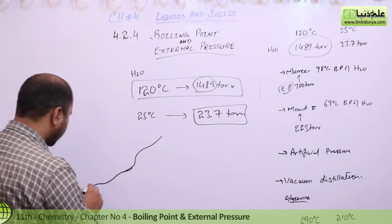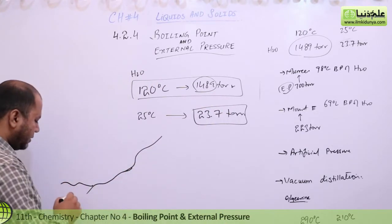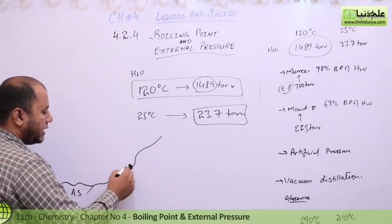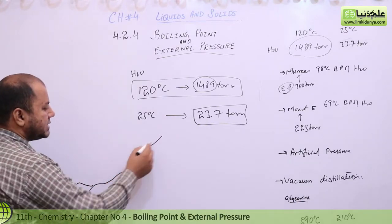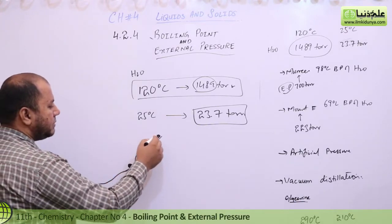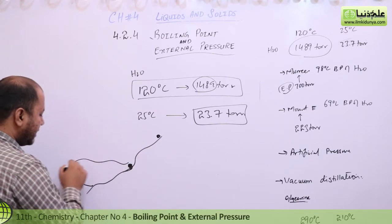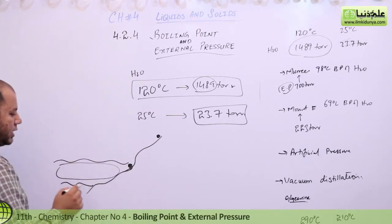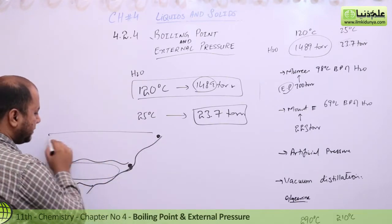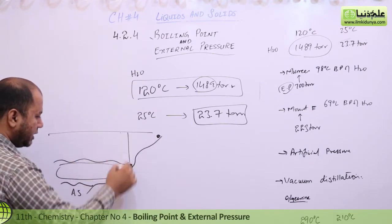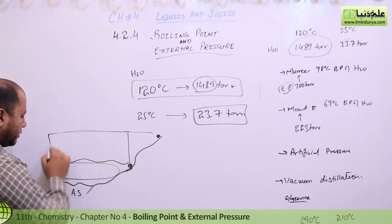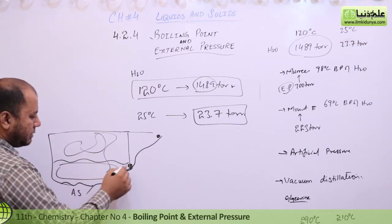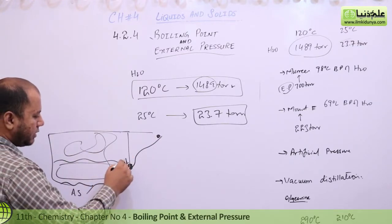Let's say that this is Pakistan, this is the Arabian Sea, and this is Lahore. If you go to Murree, then definitely the atmosphere column there is quite large. Looking at that, if you measure in cubic centimeters, the atmosphere is applying quite a lot of pressure here.